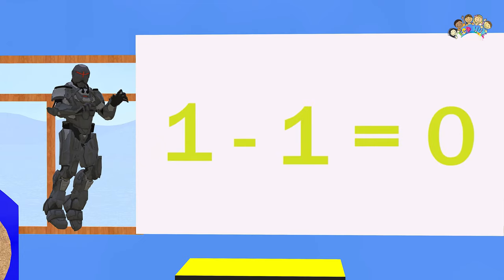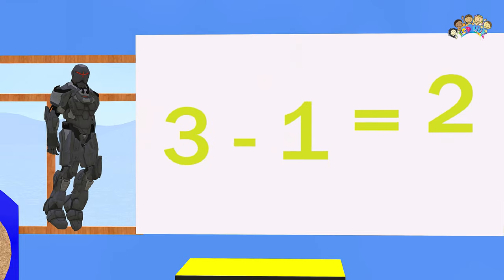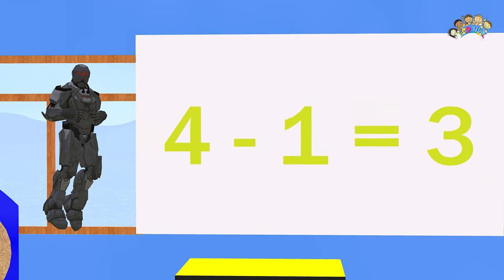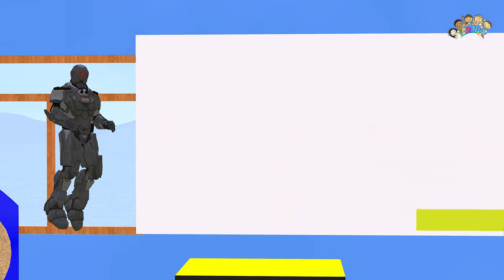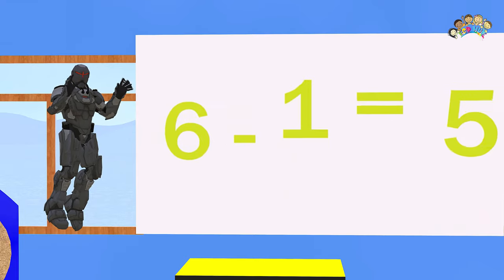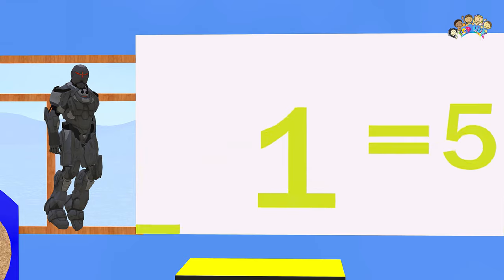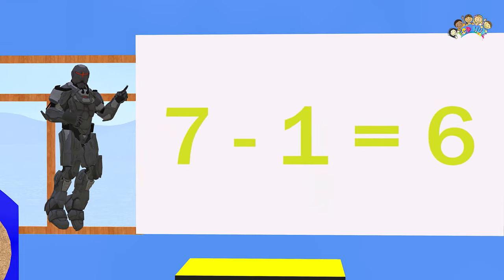One minus one equals zero. Two minus one equals one. Three minus one equals two. Four minus one equals three. Five minus one equals four. Six minus one equals five. Seven minus one equals six.